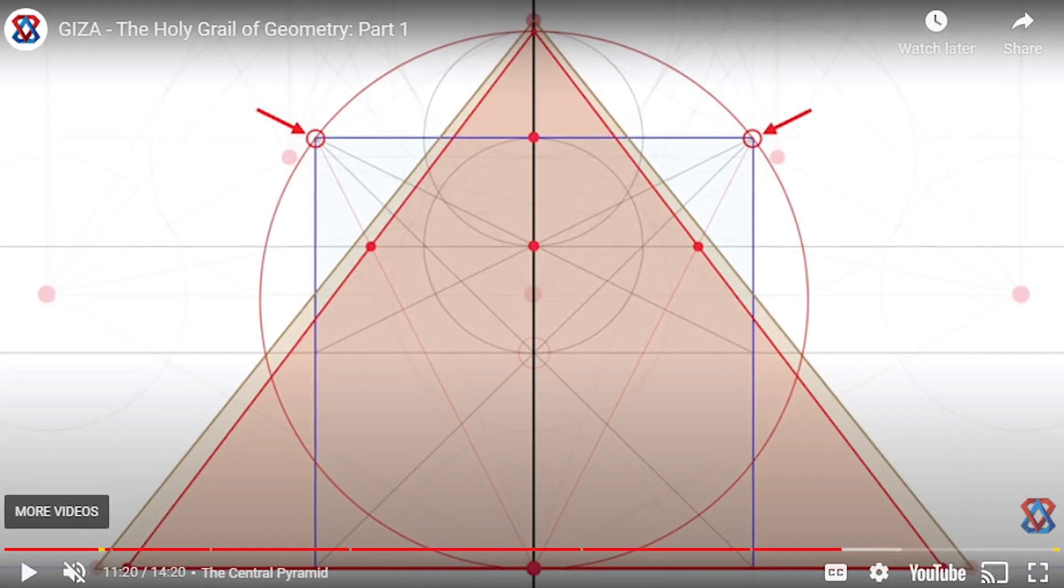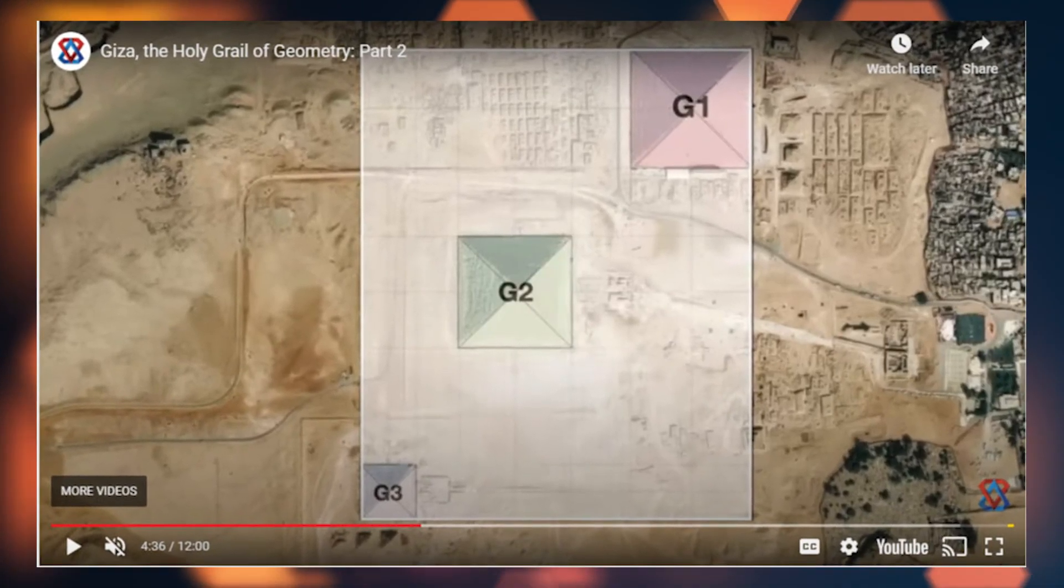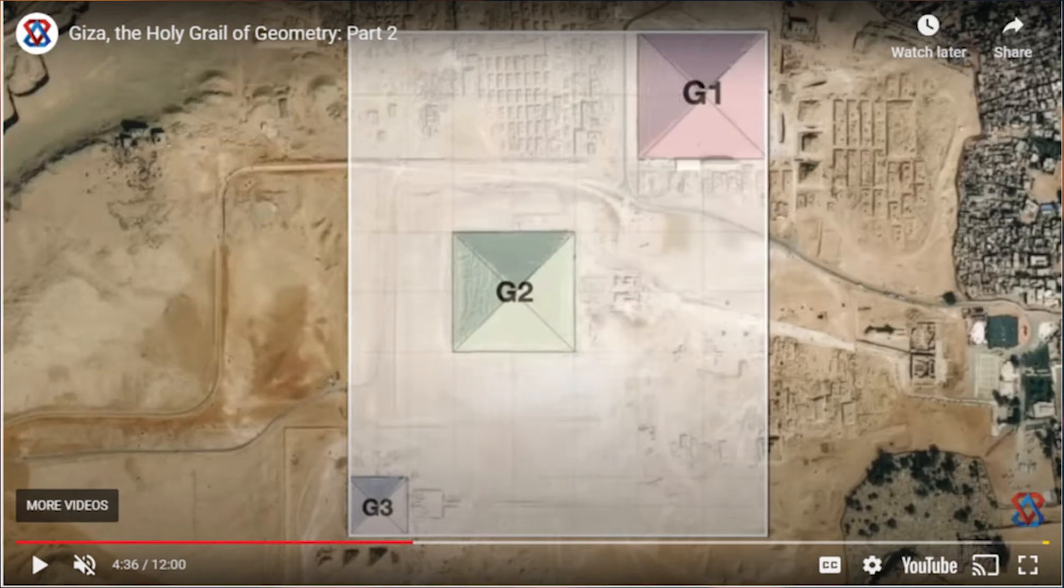Mr. Grant has shown the exact size and shapes of the three pyramids and their exact locations can be calculated with Metatron's cube.